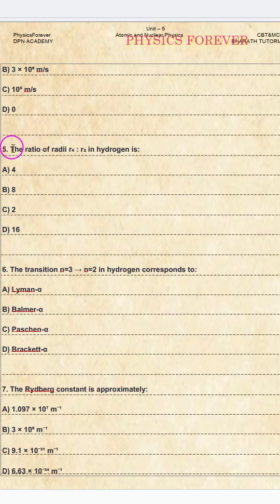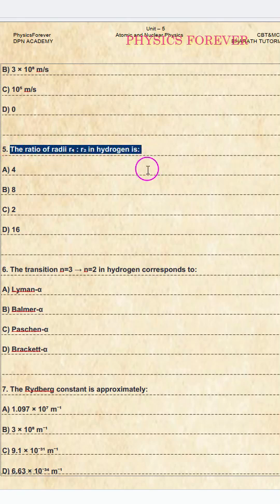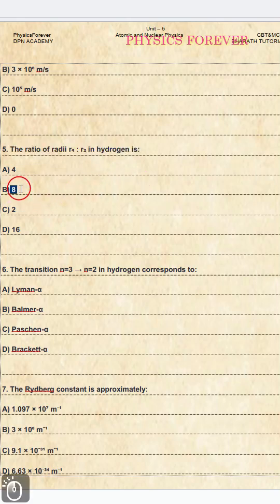Question number five: the ratio of radii r₄ to r₂ in hydrogen is? The correct option is B.